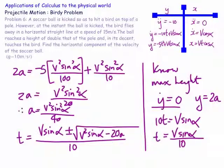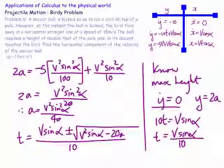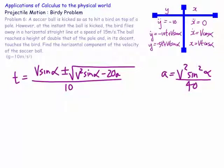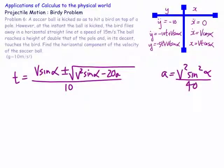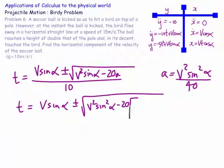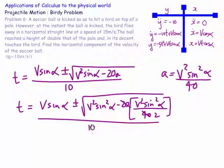What we need to do is take this a and plug it in to the time expression over here. So substituting a into the formula: t equals v sine alpha plus or minus the square root of v² sine² alpha minus 20 lots of a, which is v² sine² alpha on 40, all over 10.